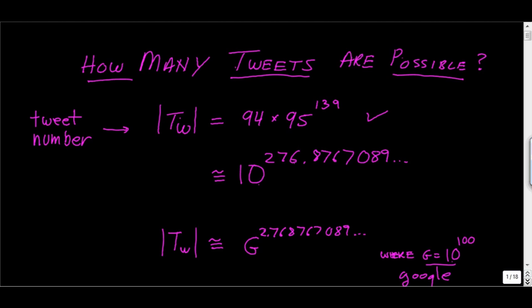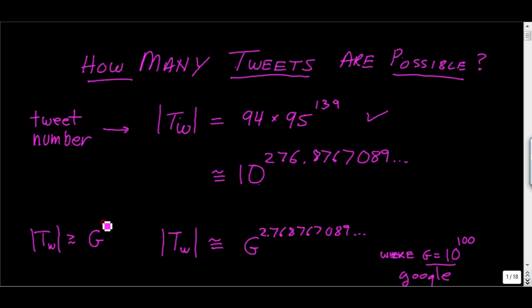That is a pretty darn big number. For instance, you can rewrite this in terms of powers of the number Google — 10 to the 100. The number of tweets is equal to G to the 2.7687 and so on. So it's bigger than the square of the number Google. There's also a kind of memory trick: a tweet is a little bit larger than, but almost equal to, Google raised to the e power, where e is the base of the natural logarithm.